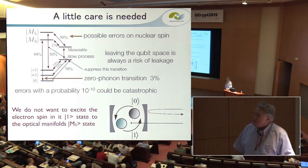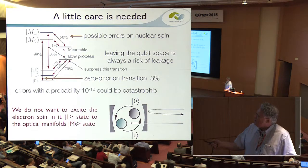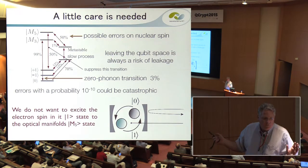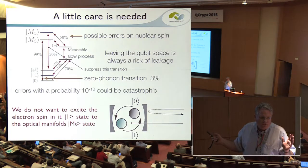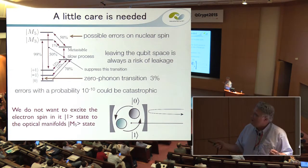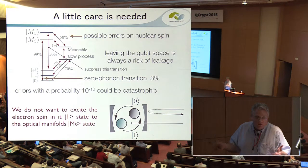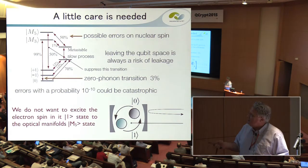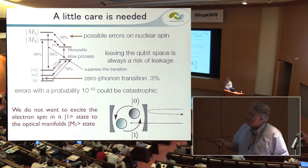That's a very hard error to distinguish from other errors that occur. You can re-initialize the NV, but you don't want to have this error. It may be very small — as low as 10 to the minus 10; we estimate probably 10 to the minus 8 — but if you're building a fault-tolerant system that you're going to grow to be quite large, you have to be careful that you know where all your error channels are.